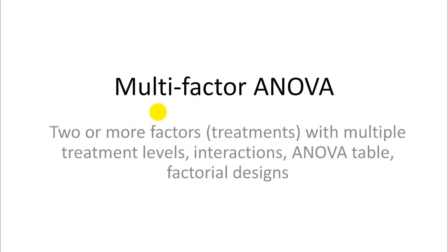One thing you can do with two or more factors is look for interactions, and I will cover what that means. The ANOVA table is slightly differently constructed, so we'll take a look at this, and I also briefly give you some examples for those factorial designs that you can use for a multi-factor ANOVA.